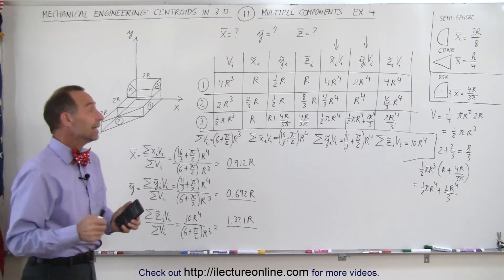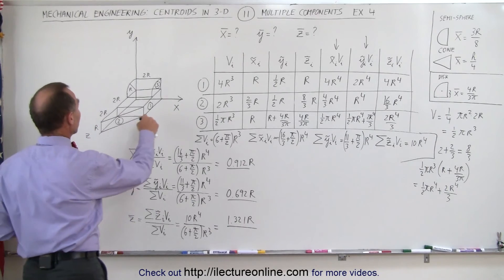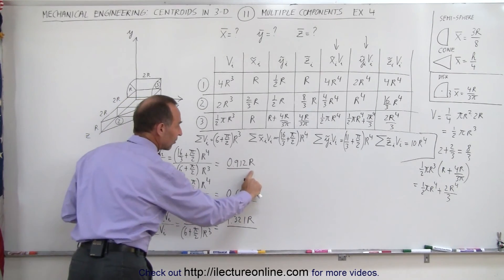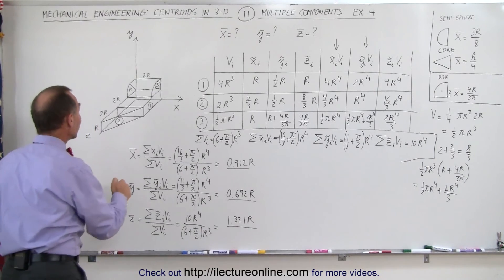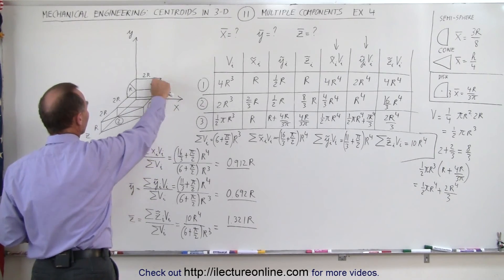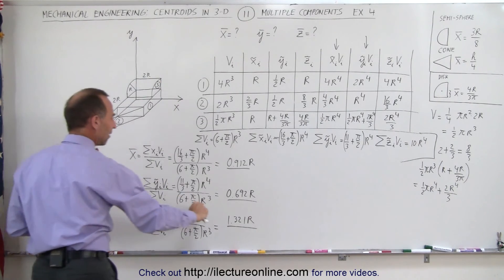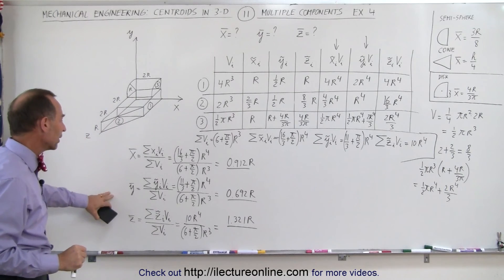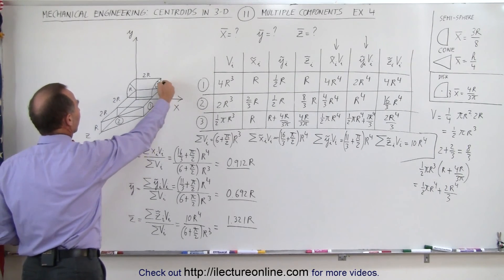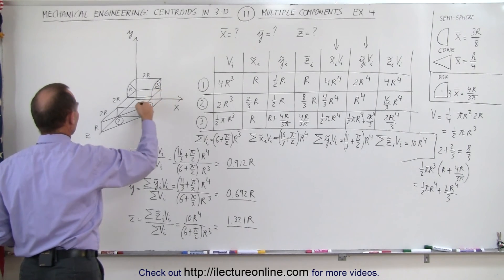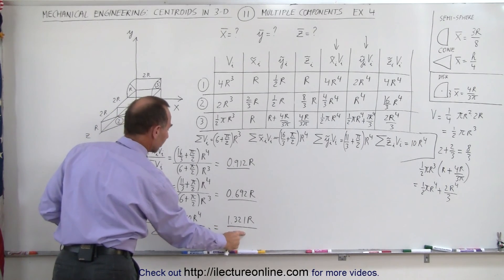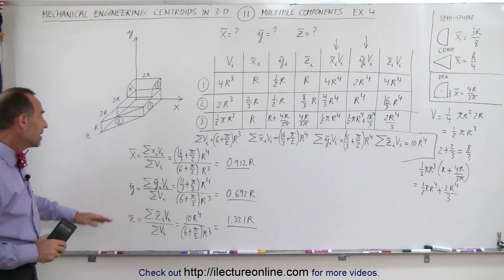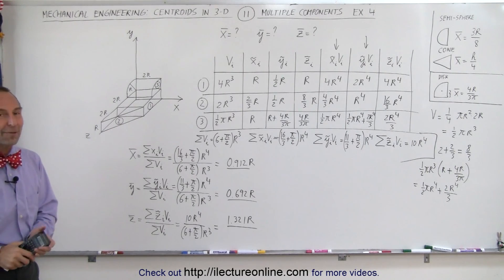Assuming no calculation errors, let's see if it makes sense. In the x-direction, we'd expect around r, and 0.912r is in the ballpark. In the y-direction, we'd expect roughly half r plus half r plus something bigger than 1, so 0.692r is reasonably close. In the z-direction, about r/2 plus r plus 3r averages out, and 1.321r seems right. Those are reasonable values. That's the x, y, and z coordinates of the centroid of this particular object — and that's how it's done.